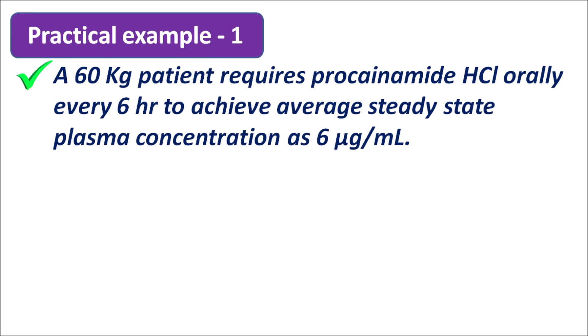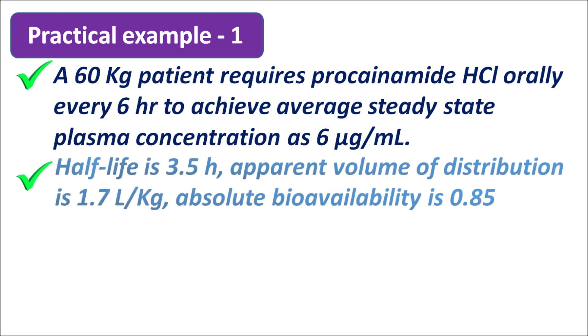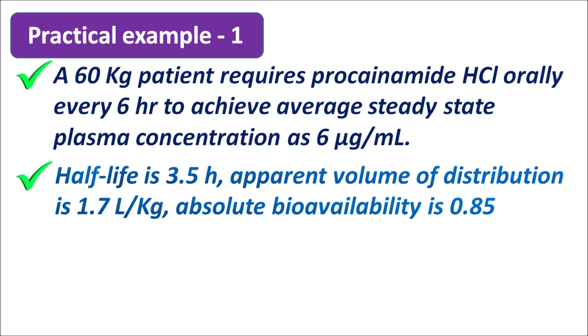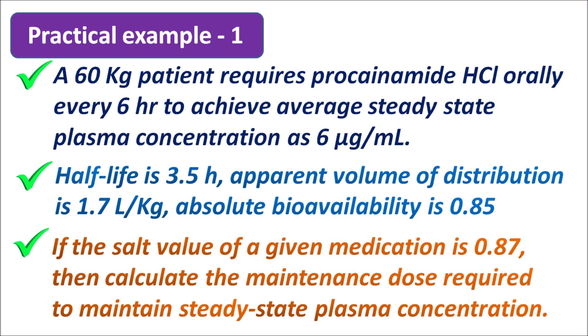A 60 kg patient requires procainamide HCl orally every 6 hours to achieve an average steady state plasma concentration of 6 micrograms per ml. Half life is 3.5 hours, apparent volume of distribution is 1.7 liters per kg, absolute bioavailability is 0.85. If the salt value of the given medication is 0.87, then calculate the maintenance dose required to maintain steady state plasma concentration.